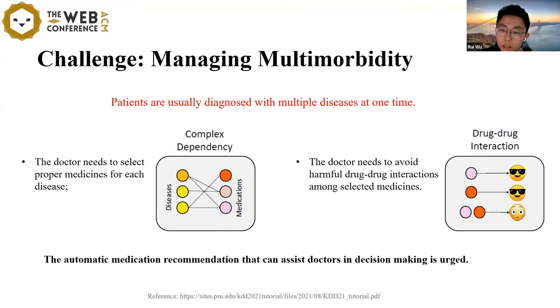The main challenge in drug recommendation lies in managing multimorbidity. Multimorbidity can be understood as patients are usually diagnosed with multiple diseases at one time. In this situation, conducting a considerate medication recommendation is difficult. On one hand, the doctor needs to select proper medicines for each disease, but there is a complex dependency between drugs and diseases. On the other hand, the doctor needs to avoid harmful drug-drug interactions among selected medicines.